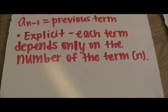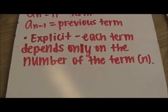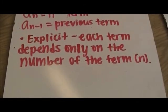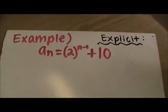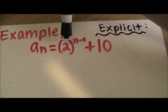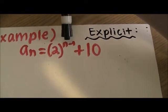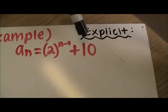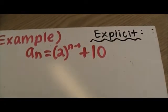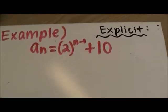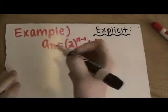The other way of finding a sequence is explicit, which is each term depends only on the number of the term, which is n. The example is: a sub n equals 2 to the n minus 1 power plus 10. We're going to show you how to do this — Drew's going to write this out and Ashley's going to explain it.